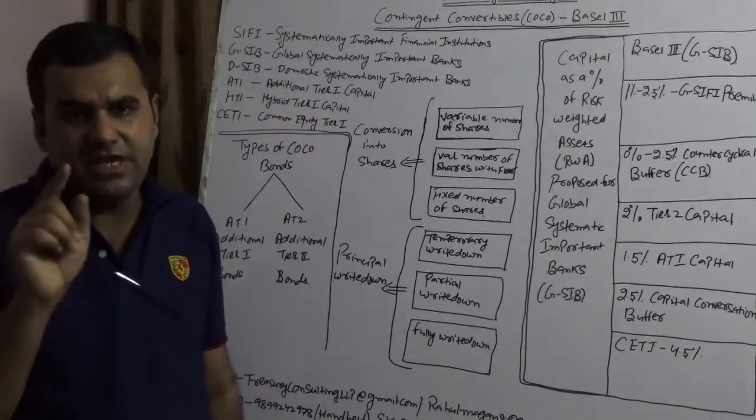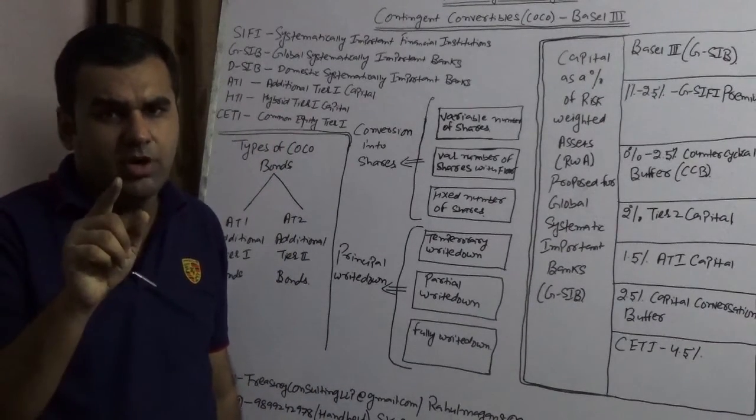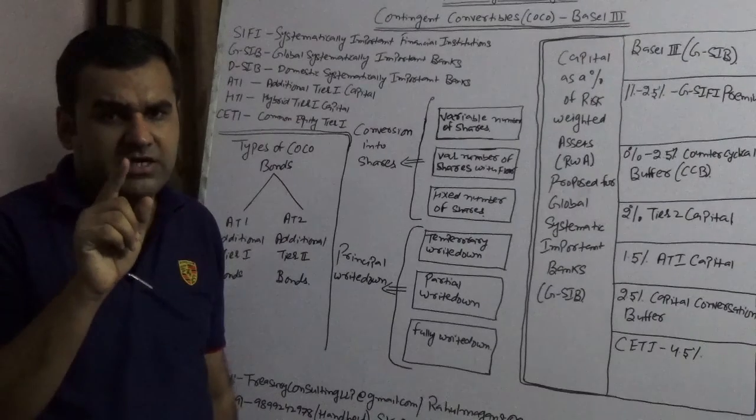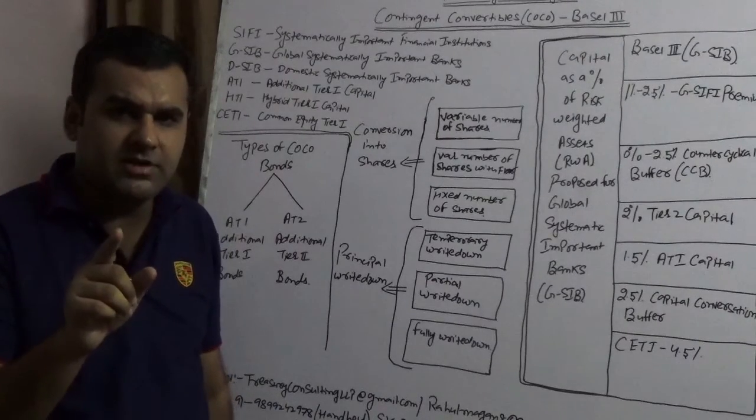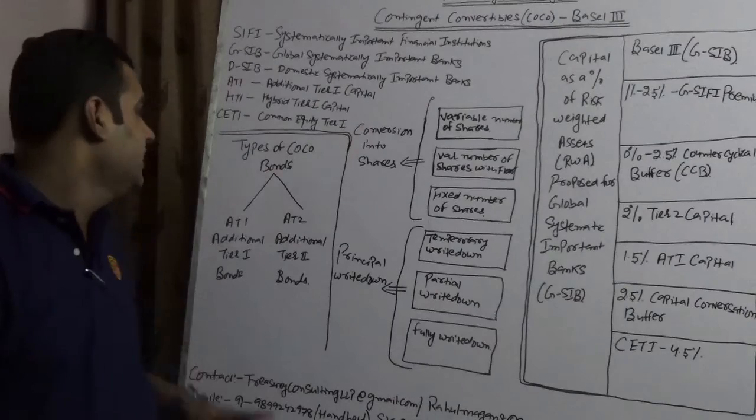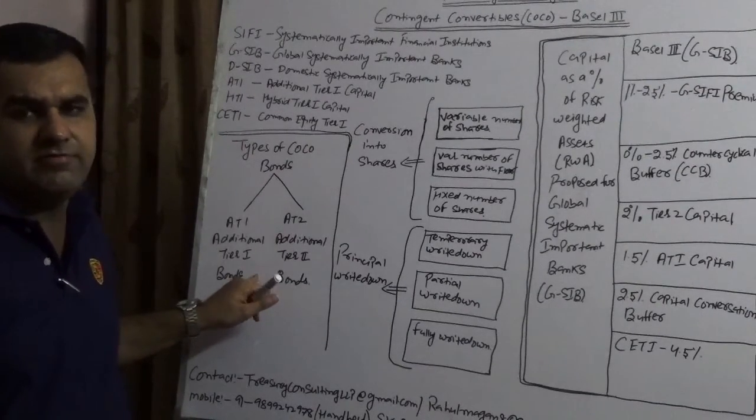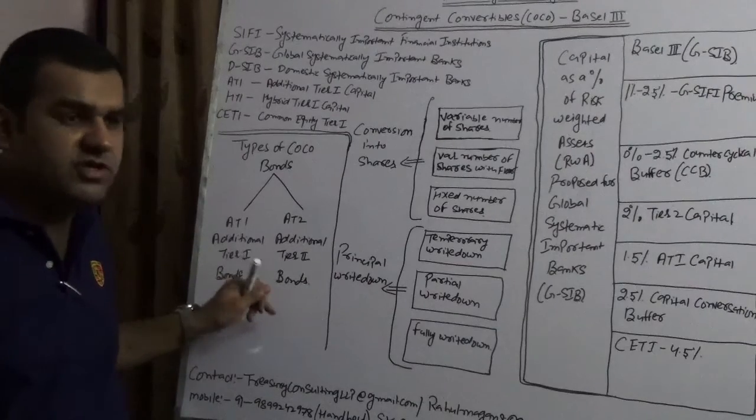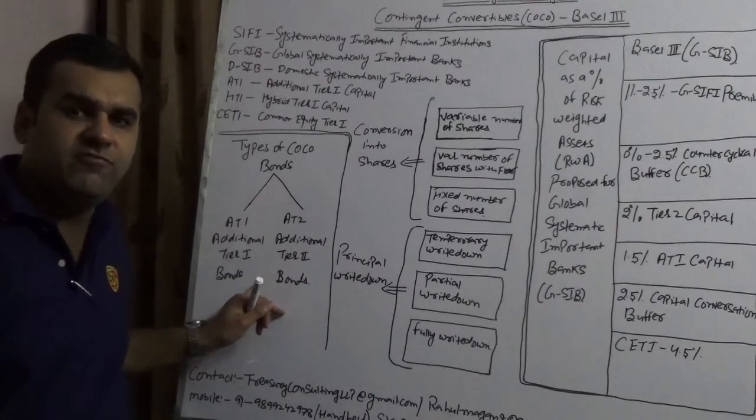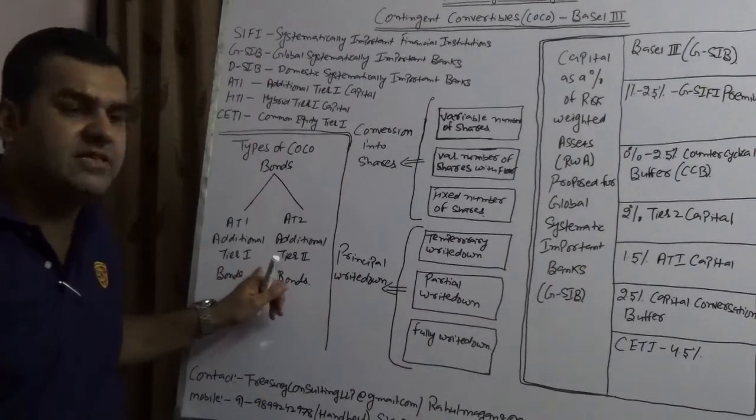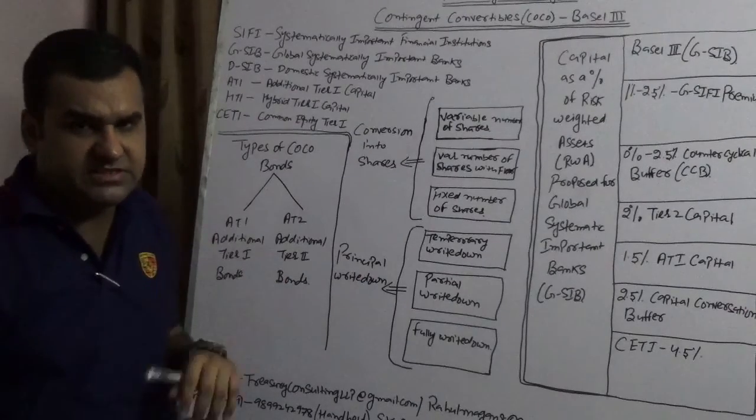If you carefully remember, State Bank of India recently issued a bond of 10 years in the US market. It was not a contingent capital, but this was AT1, additional tier 1 bond. This was the first time when Reserve Bank of India approved any public sector bank to come forward and take the money in the form of AT1, which is additional tier 1.